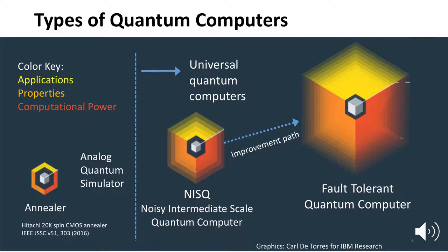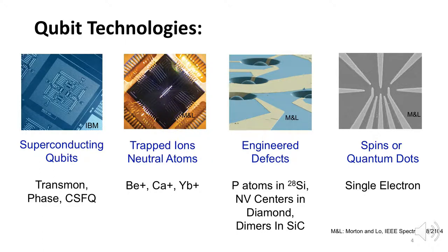A variety of qubit technologies have been demonstrated, including superconducting qubits, trapped ions or neutral atoms like beryllium, calcium, or ytterbium ions, engineered defects like phosphorus in silicon, nitrogen vacancy centers in diamond, or dimers in silicon carbide, and spins in quantum dots, which are single electrons. I will discuss specific examples of these technologies; there are other qubit technologies like photons that I do not have time to discuss.